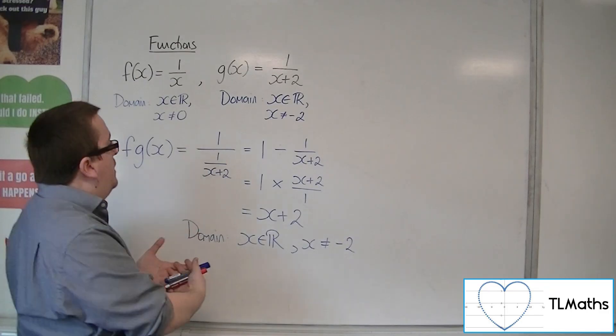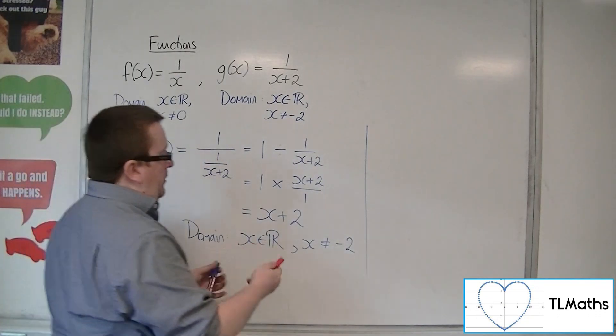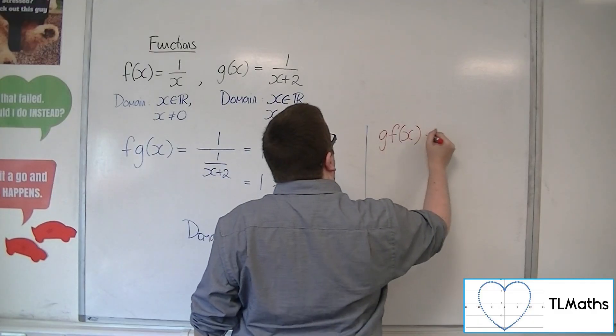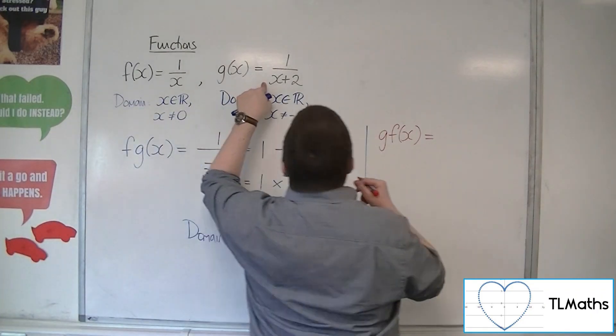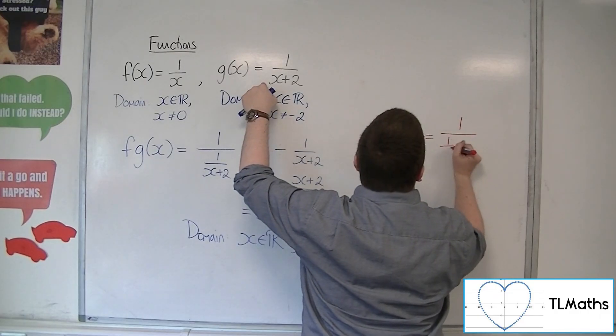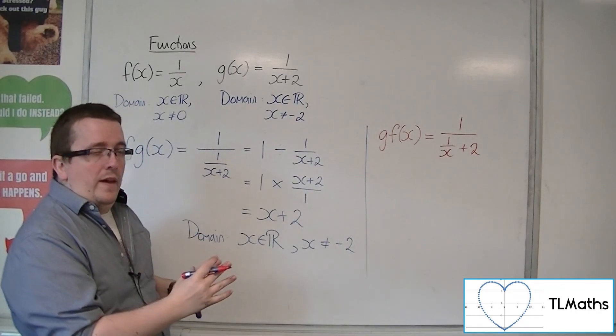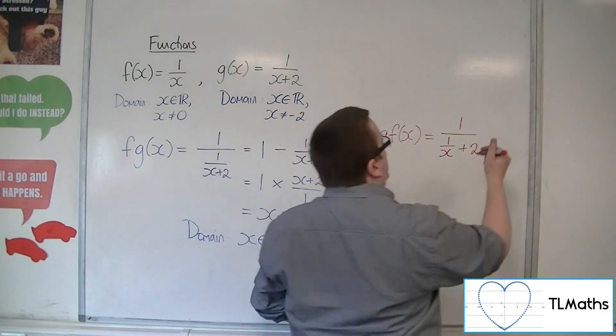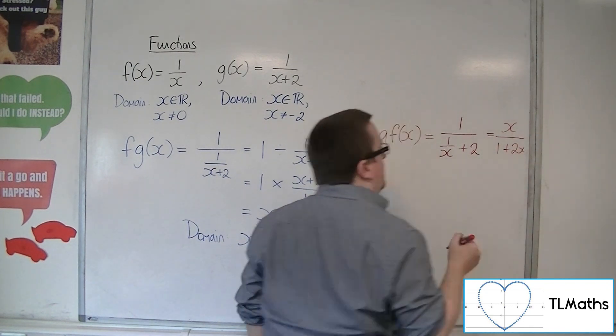Let's see it from the other point of view. Let's see it from g f of x. This time we've got f going into g. In that case, we're going to have 1 over 1 over x plus 2. Now, I don't want to leave it like that. I've got a fraction within a fraction, so I'm going to multiply top and bottom by x. So we're going to have x over 1 plus 2x.